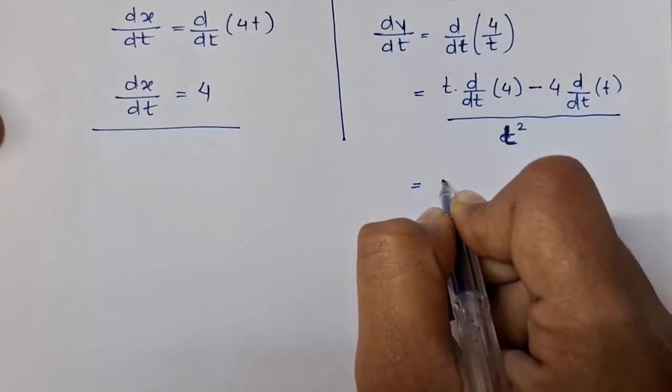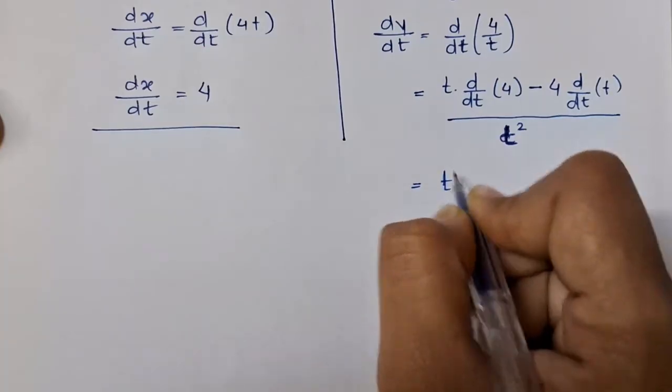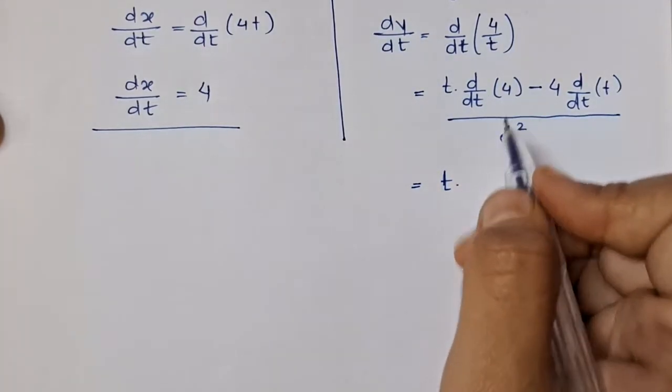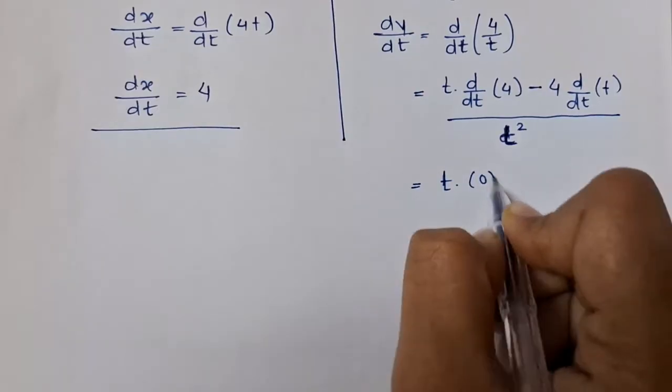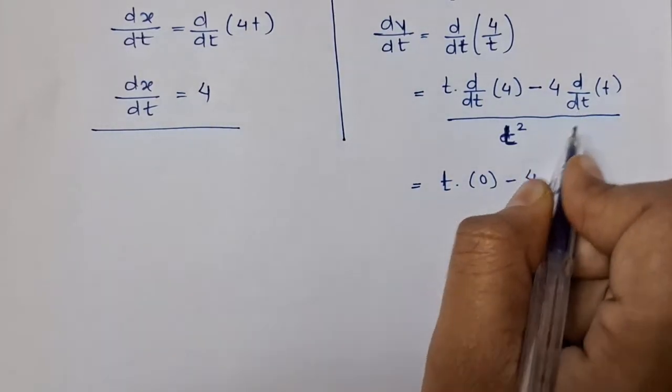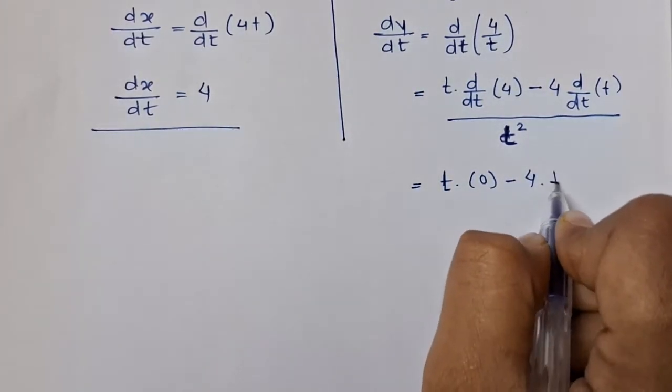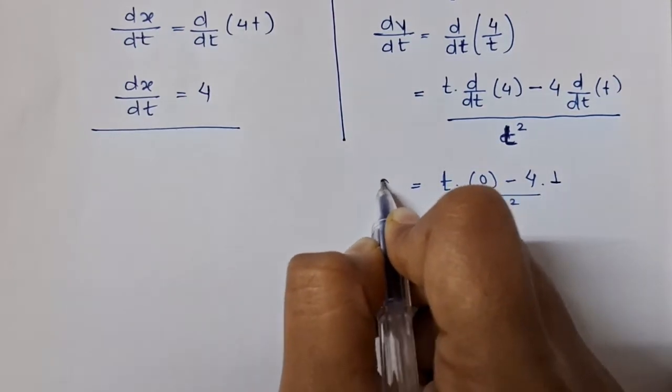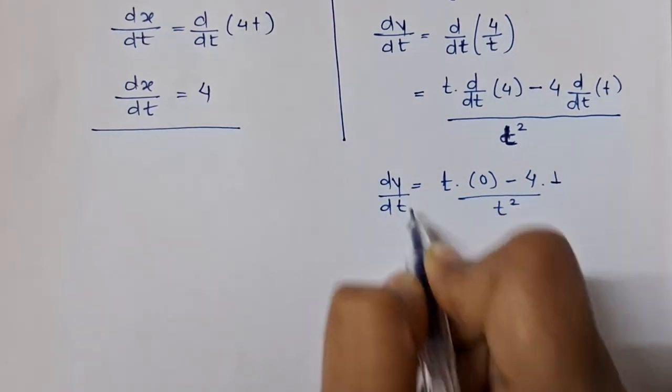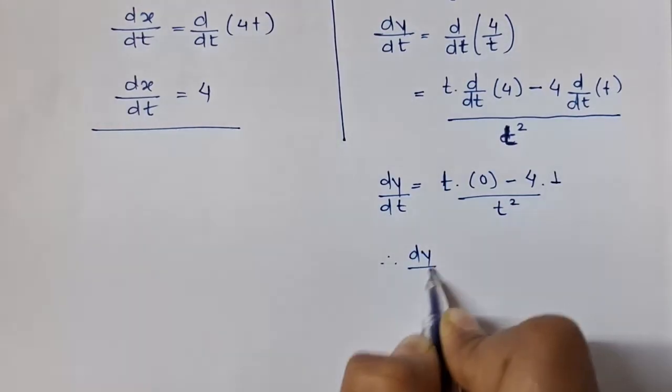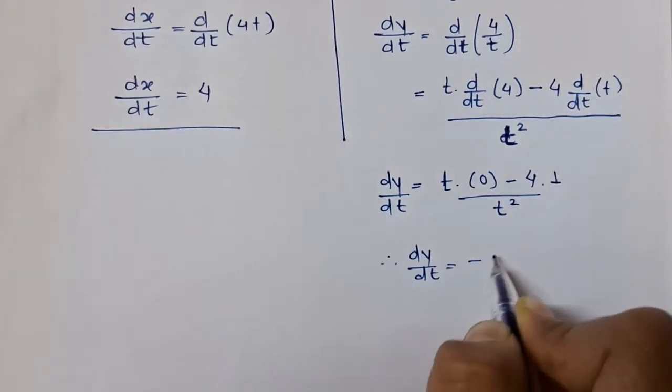Further evaluating this, we get t will be as it is and d/dt of 4 will be 0, minus 4 will be as it is and d/dt of t will be 1, upon t² will remain as it is. So dy/dt = -4/t².